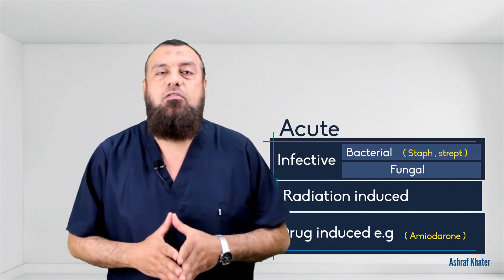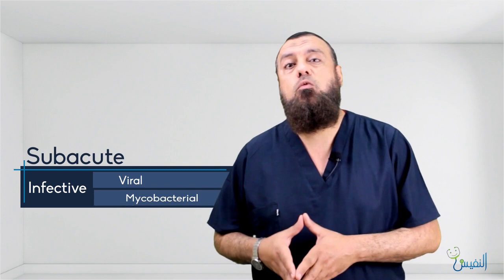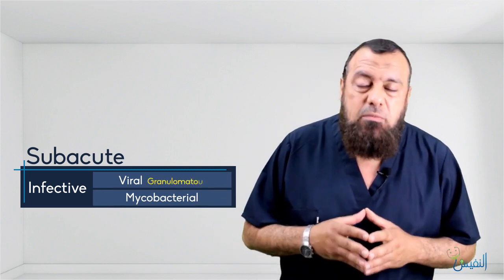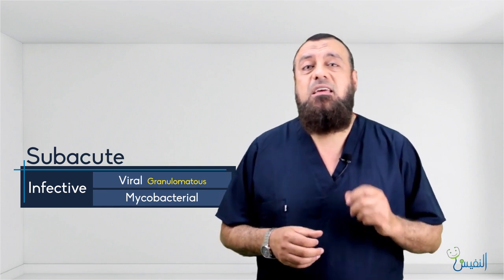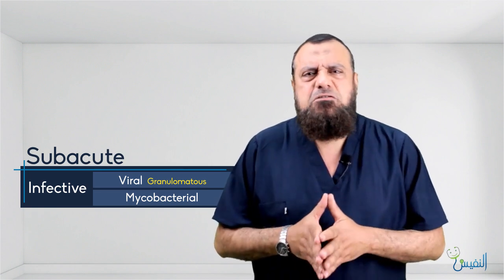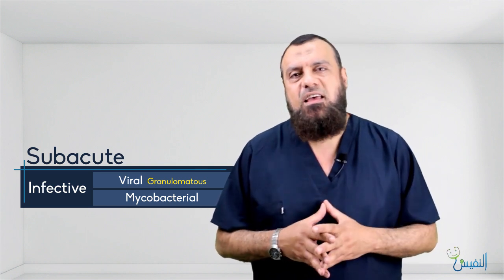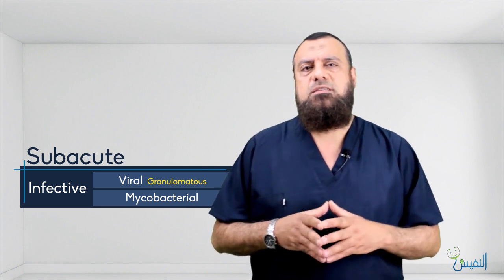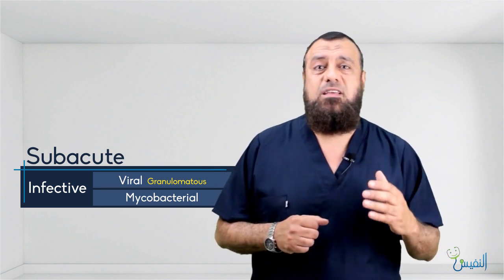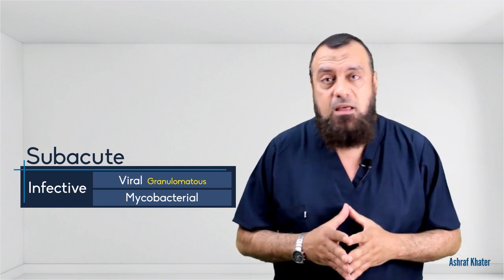The subacute thyroiditis may be infectious in origin, and it may be viral or mycobacterial. The viral cause is what we call granulomatous thyroiditis, which is termed de Quervain's thyroiditis — it is granulomatous and looks like tuberculosis thyroiditis. The main difference is by isolation of the TB organism inside the granuloma itself. So, viral origin is called de Quervain's thyroiditis, and there is mycobacterial, with the difference between them being isolation of the TB organism.